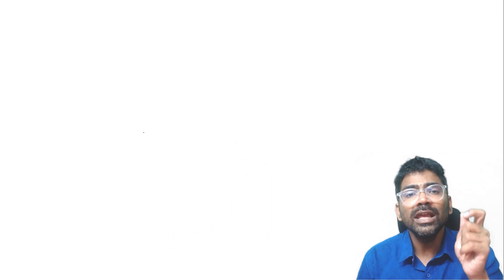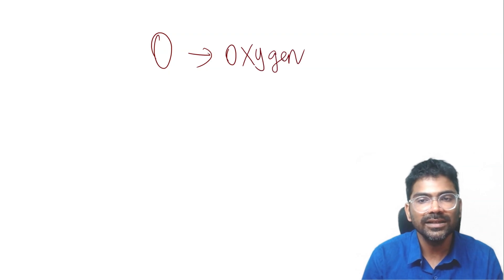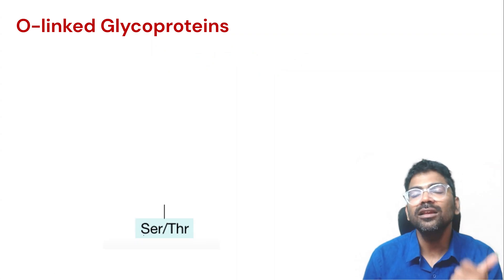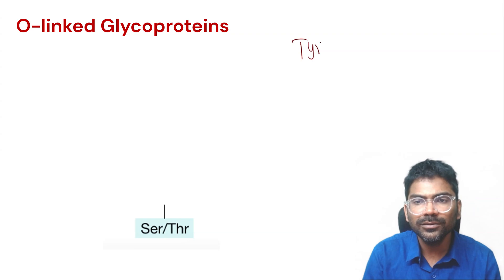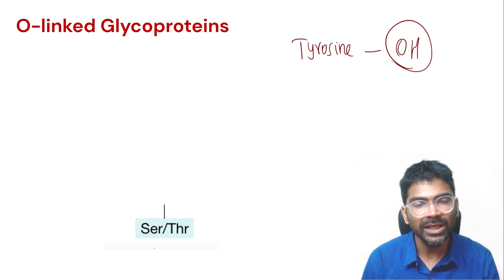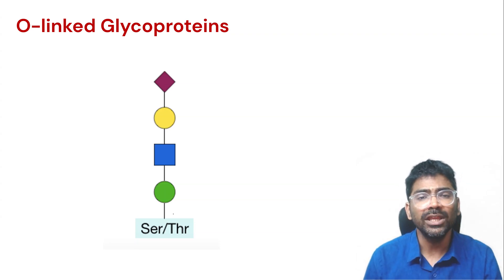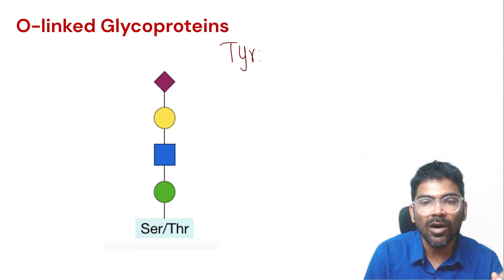In O-linked glycoproteins, the oligosaccharide side chains are attached to the oxygen atom of hydroxyl group-containing amino acids — serine or threonine. Tyrosine also contains an OH group, but in most O-linked glycoproteins, the attachment is to serine or threonine. There is only one glycoprotein to which the carbohydrate is attached to the OH group of tyrosine.